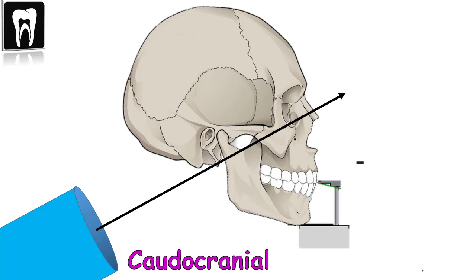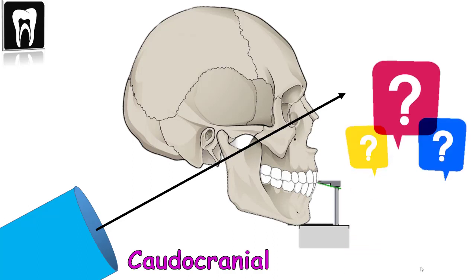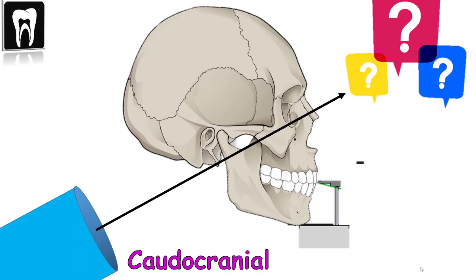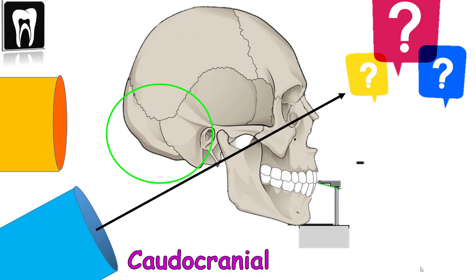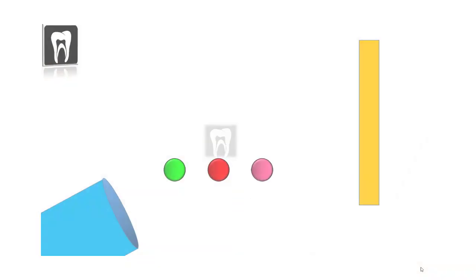So why do we have a caudocranial inclination in the panoramic radiograph? Because the teeth and jaws are very important in this radiography. If we had a right-angle tube, the x-ray would be absorbed by the skull base — the occipital bone and sphenoid bone — and we wouldn't have a good view of the teeth and jaws in different buccal-lingual positions.